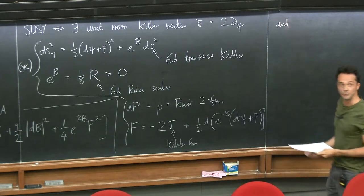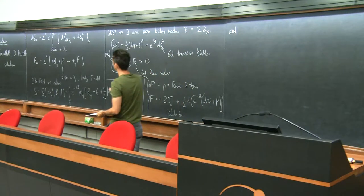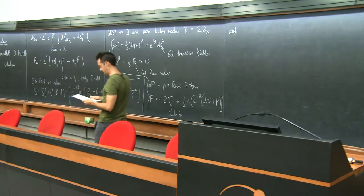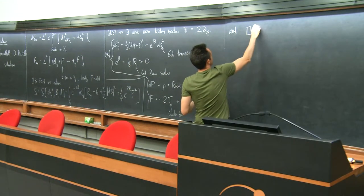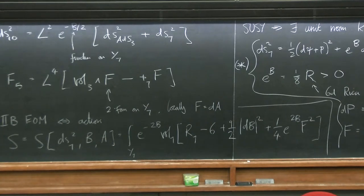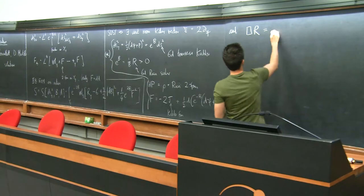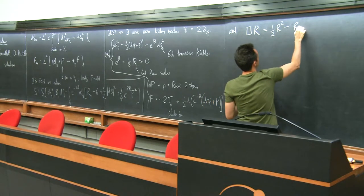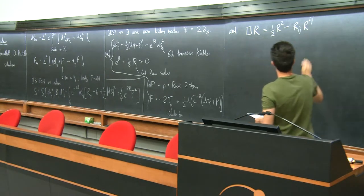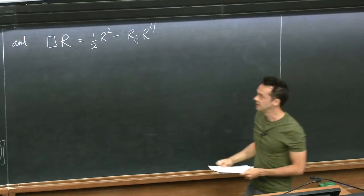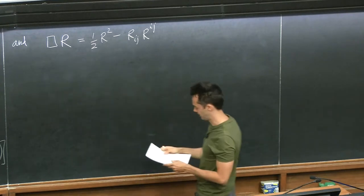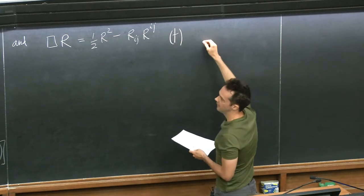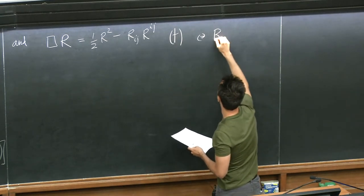There's one more equation to impose: the Bianchi identity for F5, which is equivalent to the equation of motion for F. That gives the equation □R = ½R² − Ric·Ric, where everything is for the Kähler metric. I'll call that (†), and it's equivalent to the Bianchi identity for F5. It's a fact that supersymmetry plus the Bianchi identity implies the equations of motion in this case, so these solutions are necessarily critical points of this action.